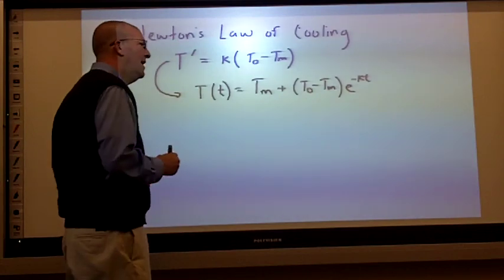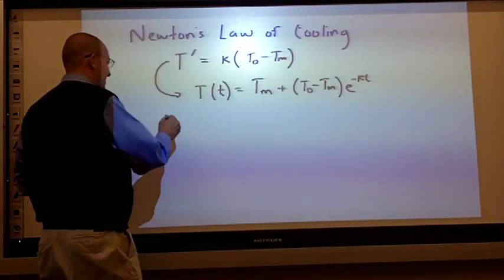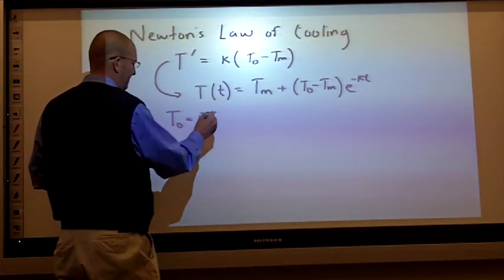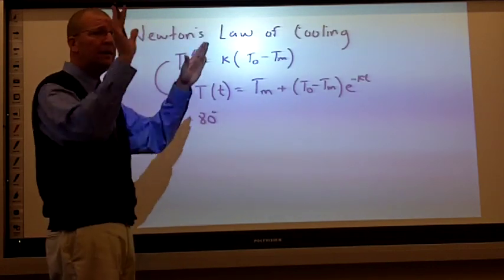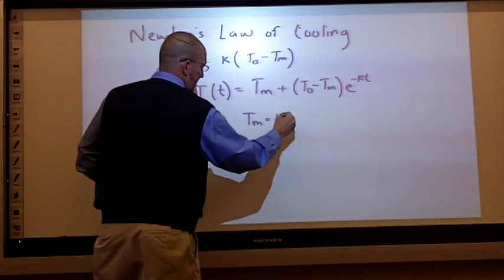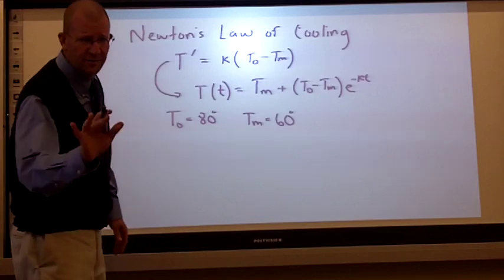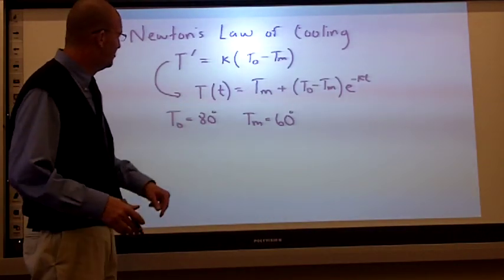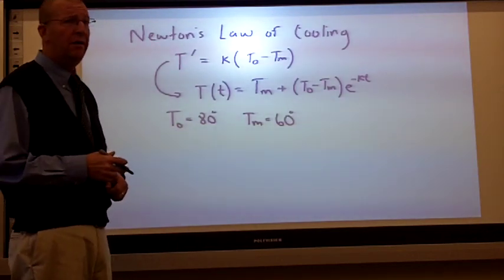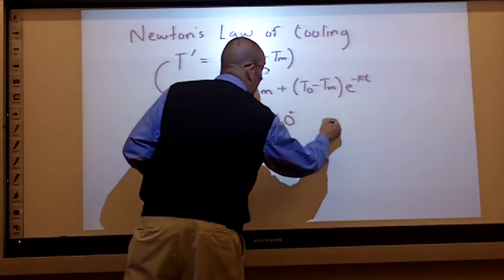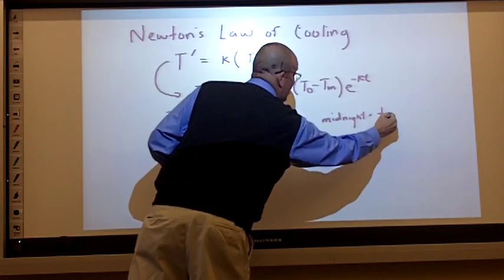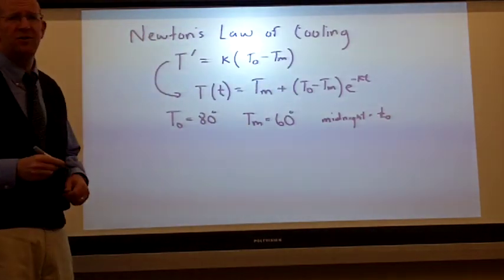Let's do an example. Let's say you come across a body. The initial temperature of the body is 80 degrees. The temperature of the medium in the motel room, say for example, is 60 degrees. So, let's review. You've checked into the motel. You know the room has been at a constant temperature of 60 degrees. You find a dead body at midnight. We'll say that midnight is the initial temperature, little T sub 0. And that body's temperature is 80 degrees.